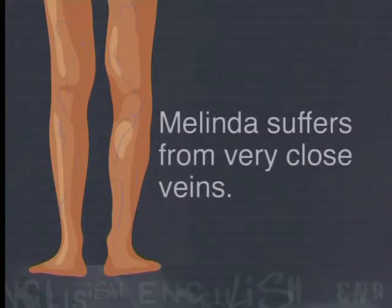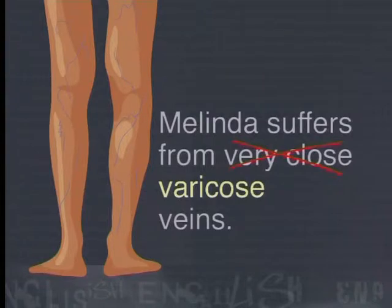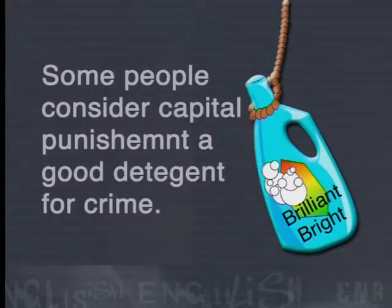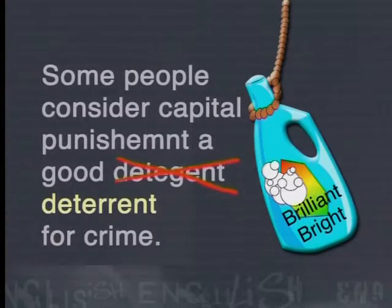The easiest way to understand Malapropism is to look at some examples. 'Melinda suffers from very close veins in her legs.' I'm sure that you will agree that having your veins very close to each other is not usually a problem. It is obvious that the word 'varicose' should have been used instead. Let's look at another example: 'Some people consider capital punishment a good detergent for crime.' The word 'detergent' has been used out of context and should be replaced with 'deterrent,' meaning something that discourages people from committing serious crimes.